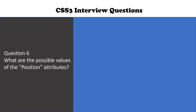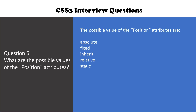Question number six is: what are the possible values of the position attribute? The possible values of the position attribute are: absolute, fixed, inherit, relative, and static.